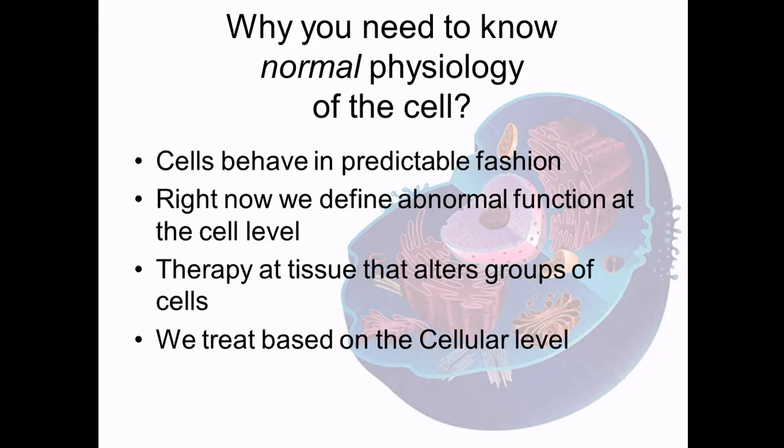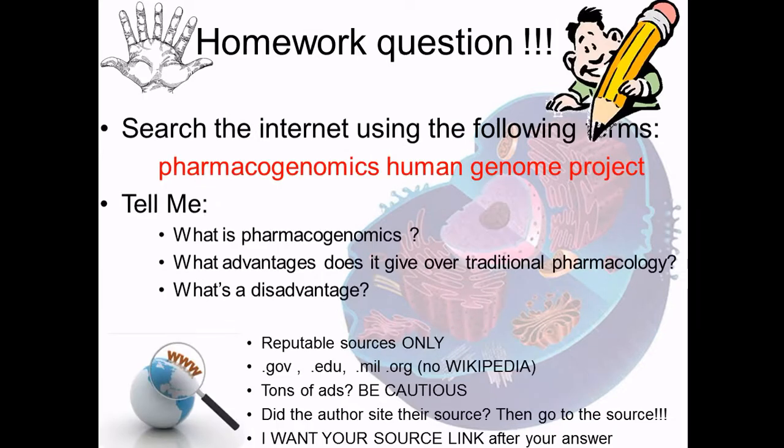Why do you need to know normal cell physiology? Because cells behave in predictable fashions. If you know the basic functions of a cell, you can predict how they're going to progress — just like with disease overall. Right now, we define abnormal function at the cellular level, and we treat at the cellular level. When you take a pharmacological agent, you're affecting cells and the organelles inside them. The last homework question is to Google pharmacogenomics and the Human Genome Project and answer: what is pharmacogenomics, what advantage does it have over traditional pharmacology, and what are the disadvantages? We're treating at the cell level now, but you'll need to figure out where we're targeting next.